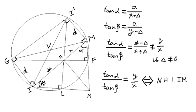base IM. And that the distances of points M and I are X plus delta and Y minus delta, respectively. Where delta is positive, negative or zero. Then tangent alpha is A over X plus delta and tangent beta equals A divided by Y minus delta. So that the ratio of tangent alpha to tangent beta equals Y minus delta over X plus delta.